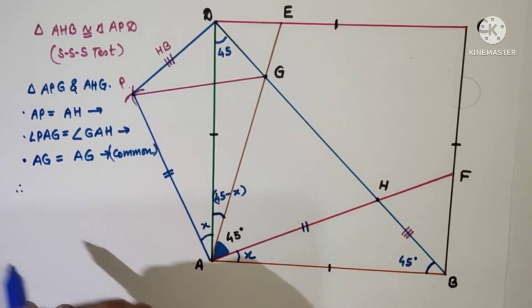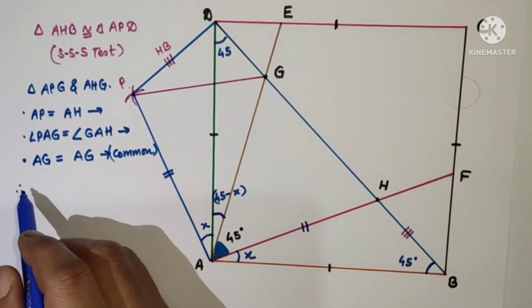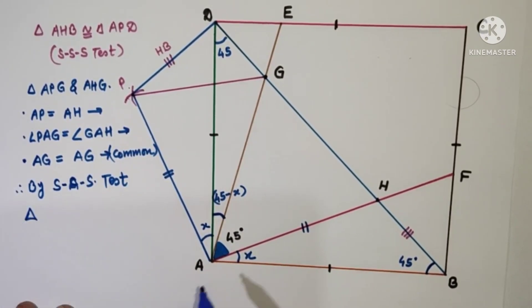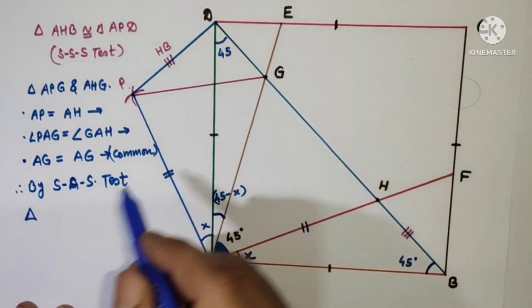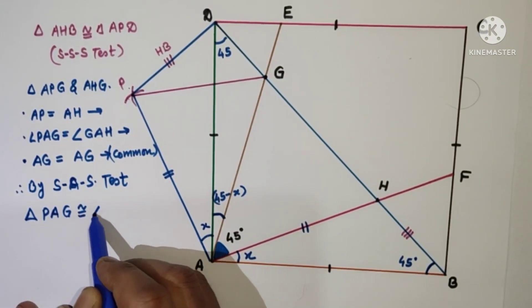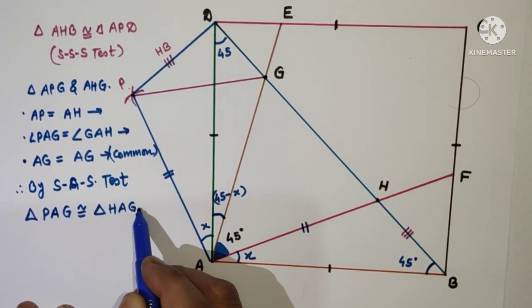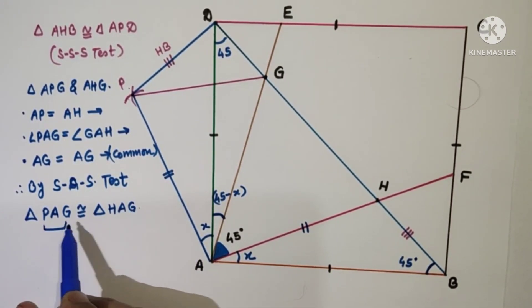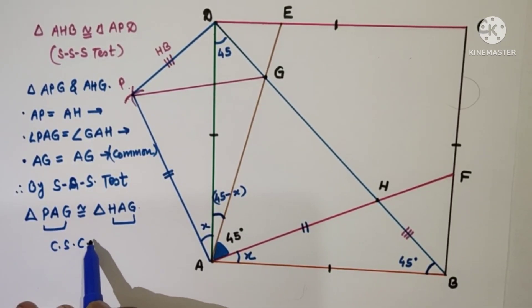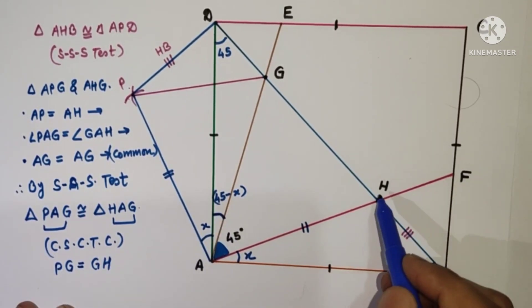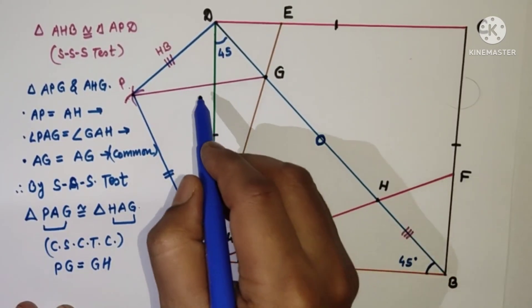So therefore, by SAS test, triangle PAG is congruent to triangle HAG. Therefore, PG is equal to HG. Corresponding sides of congruent triangles are congruent. PG is equal to GH. This GH length will be this.